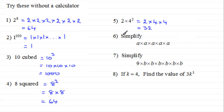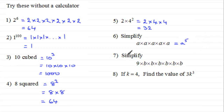Number six: simplify a times a times a times a times a. The letter a is repeated five times, so that's a to the power five.